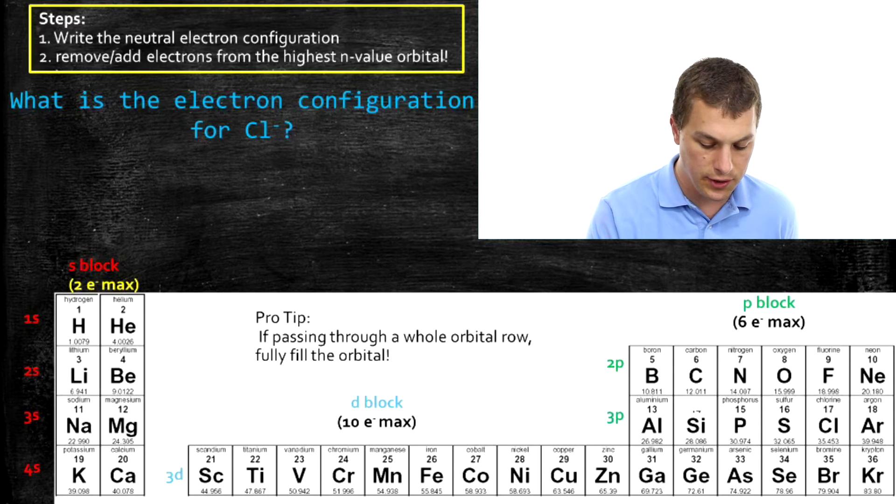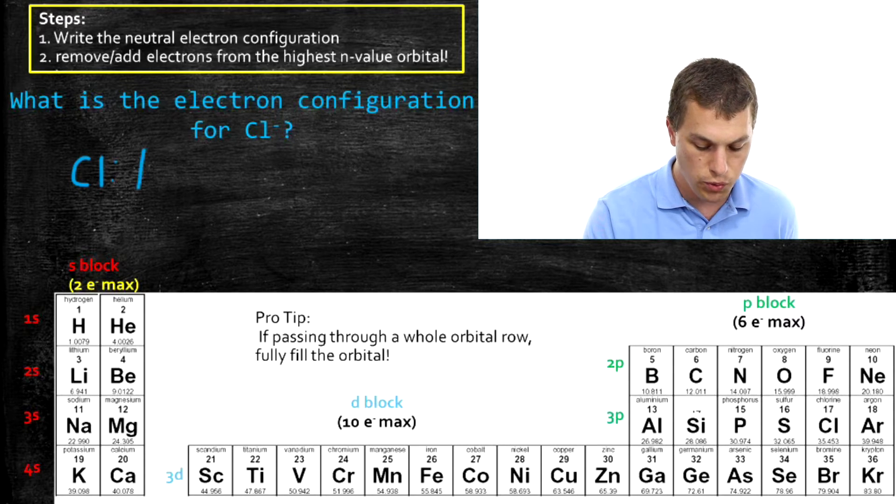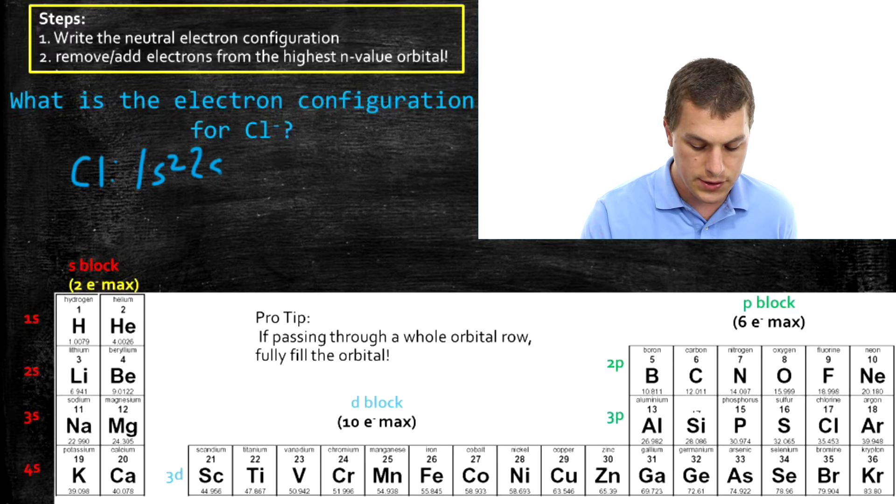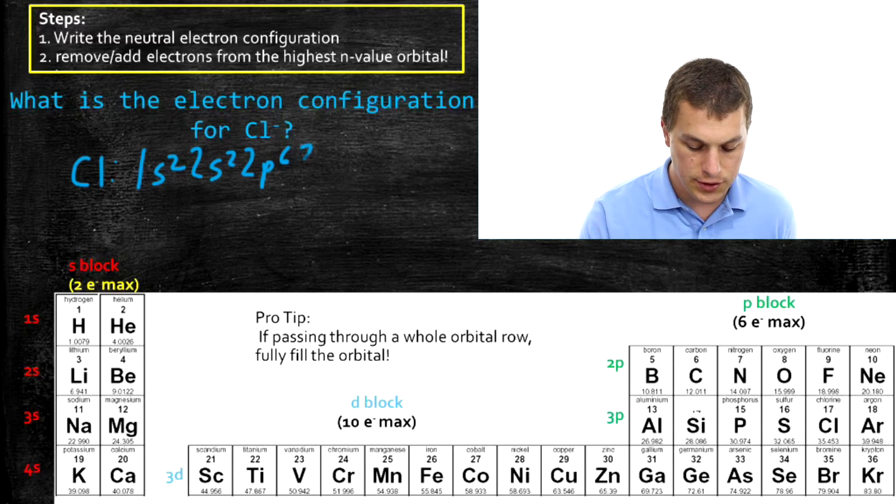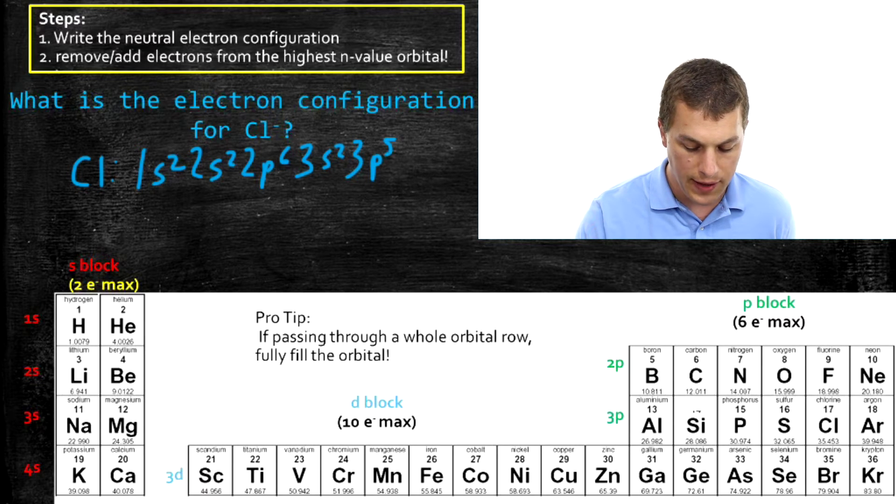Well, we write the electron configuration for neutral chlorine, which is 1S2, 2S2, 2P6, 3S2, and then we go into the 3P orbital, 5 spots. That gets us all the way to chlorine right here.